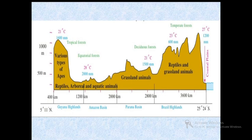Next is the Paraguay Parana Basin which extends up to 200 kilometers. We find deciduous forests here, and the wildlife consists of grassland animals. The temperature is 21 degrees Celsius and rainfall is 1500 millimeters. Next we have the Brazilian Highlands extending up to 2800 kilometers, with temperate forests, rainfall of 600 millimeters, temperature of 23 degrees Celsius, and wildlife of reptiles and grassland animals. Further we have coastal plains up to 3600 kilometers, with temperature of 27 degrees Celsius and rainfall of 1200 millimeters.